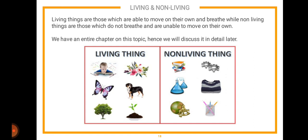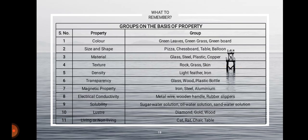The last classification is living and non-living — we will have an entire chapter on this. Living things are those which are able to move on their own and breathe, such as a boy, flowers, butterflies, a dog, trees, and plants. Non-living things do not breathe and are unable to move on their own — examples include books, metallic objects, glasses, flasks, clothes, a globe, and a pencil holder.